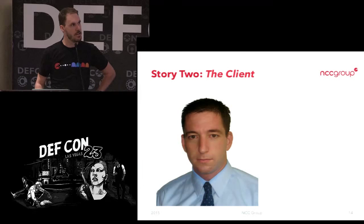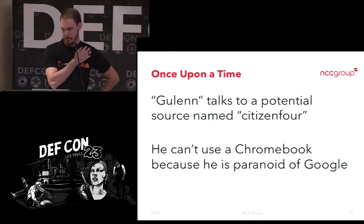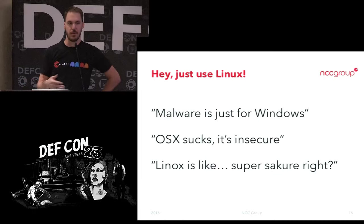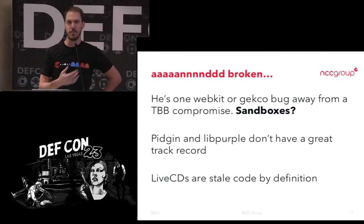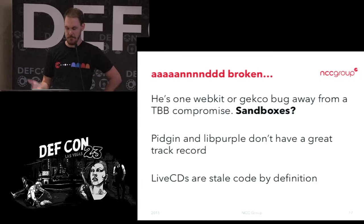The second story is Glenn. He knows a lot about security — he's Crypto Cat. He talks to a potential source who is really paranoid, wants to run Linux because he doesn't trust OSX, doesn't take Windows seriously, and all the cool kids run Linux so it must be super secure. But not really — he's one Tor Browser bug exploit away from having his machine popped. The live distro track record is not awesome.